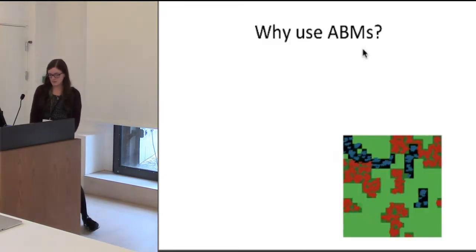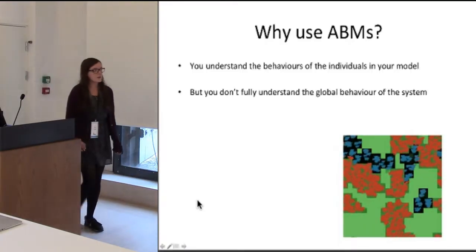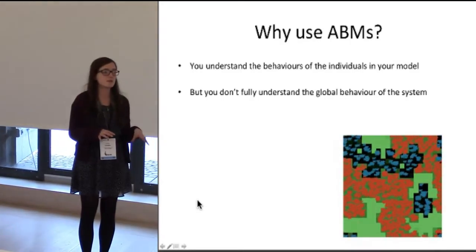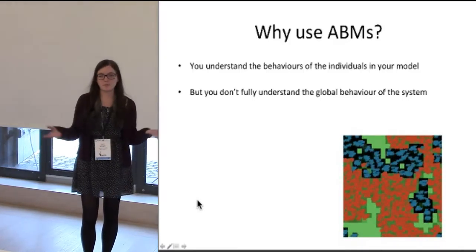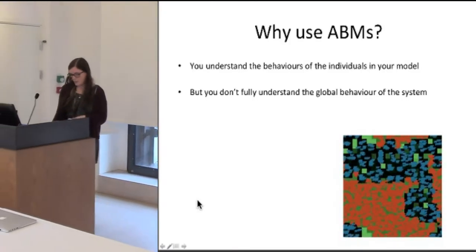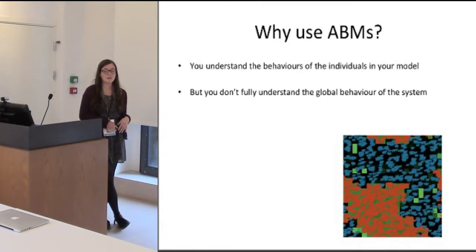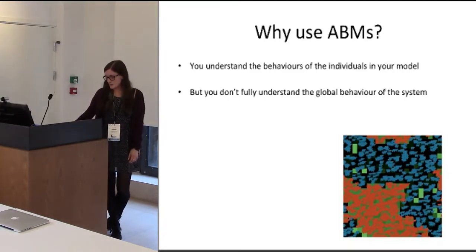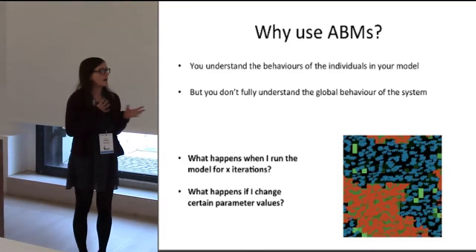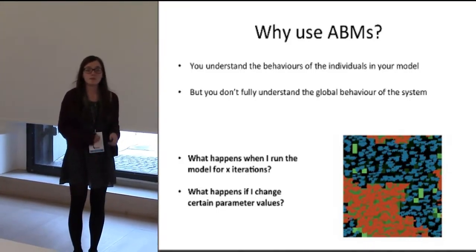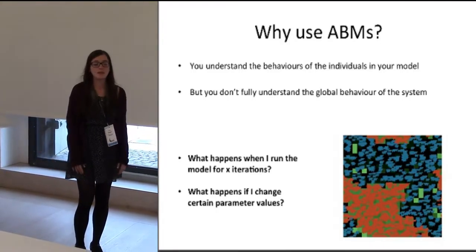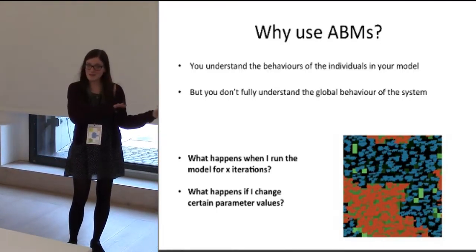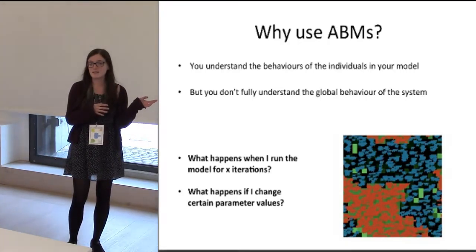But first of all, why do we use agent-based models? It's usually when we understand the behaviors of individuals but don't understand the global behavior of the system. What you can sometimes see in an agent-based model is complex behavior emerging from really simple interactions, like we saw in the flocking behavior. When we decide to make an agent-based model, it's usually to answer two questions broadly: what happens when you run the model for x iterations, and what happens when you change certain parameter values? But it's not always necessary to use an agent-based model, and these questions can be answered using different types of models.